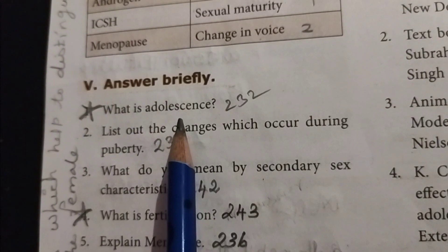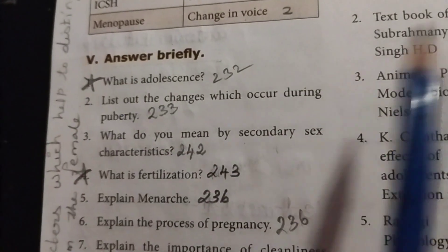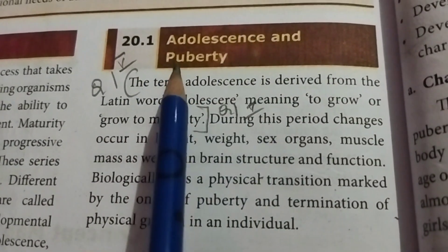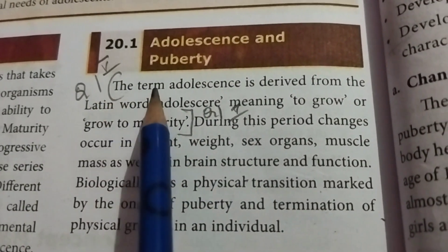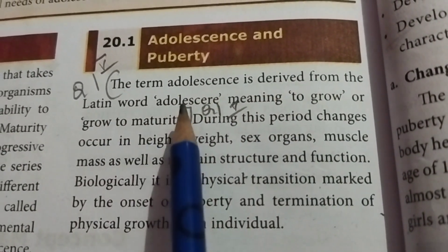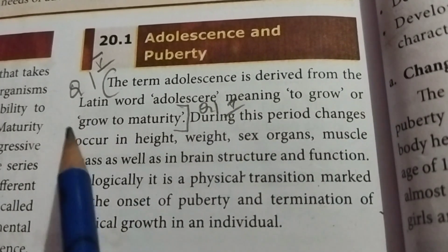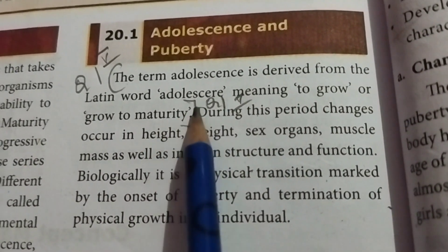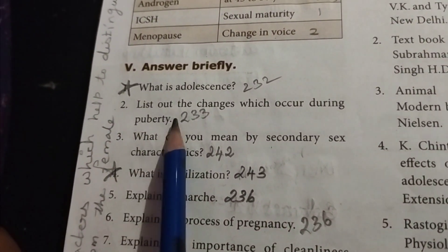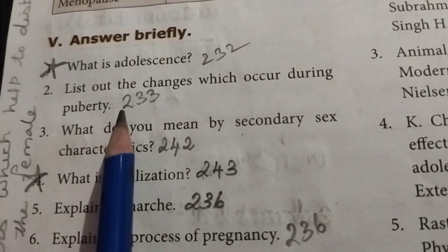Section 5: Answer in brief. Question 1: What is adolescence? Take page number 232. This is an important question. The term adolescence is derived from the Latin word 'adolescere', meaning to grow or grow to maturity. Up to this, first question answer.